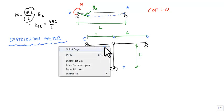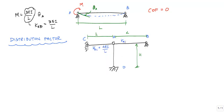Okay, this KAC is 4EI over L. This KAB, because the far end is pinned, is 3EI over L. And down here, for KAD, this is 4EI over H.